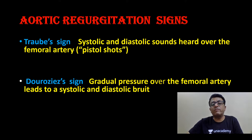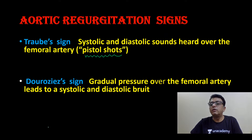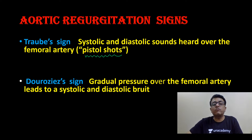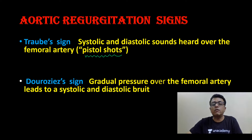Traube sign: systolic and diastolic sound heard over the femoral artery, known as a pistol shot sound. If you palpate the femoral artery and place a stethoscope there, you hear a pistol-shot sound. That is Traube sign.